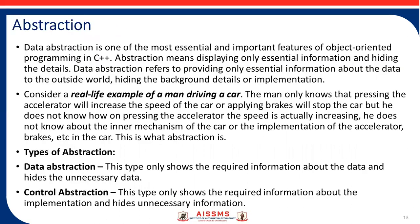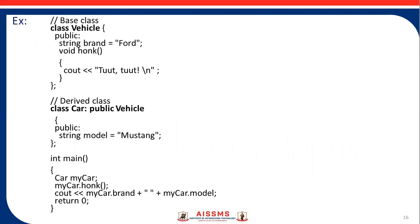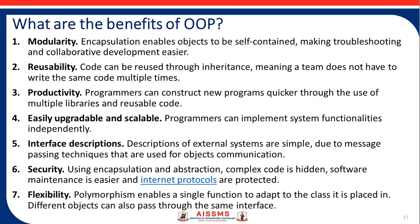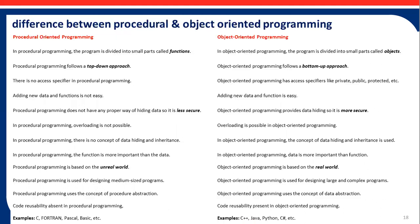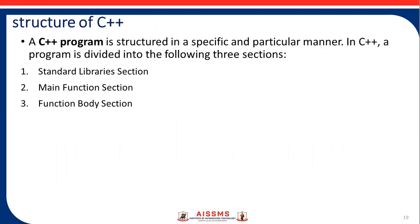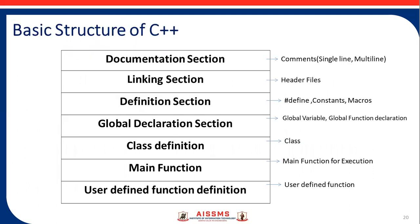The structure of C++ has three sections: the standard library section, the main function section, and the function body section. This is the basic structure of C++.